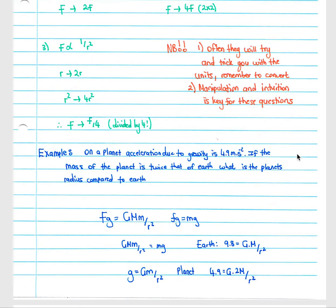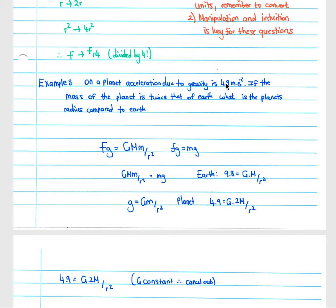Let's look at two examples. In the first example, on a planet your acceleration due to gravity is 4.9 m/s². If the mass of the planet is twice that of Earth, what is the planet's radius compared to Earth? We know that Fg equals G·m1·m2 over r squared, and Fg also equals mg. We substitute mg for Fg and solve for g, canceling the m's, giving us g equals G·M over r squared, where G is the gravitational constant and M is the mass of the planet.